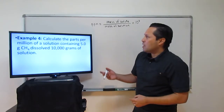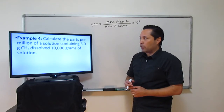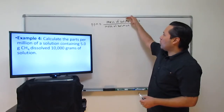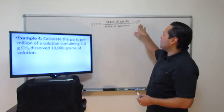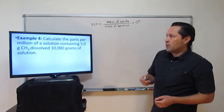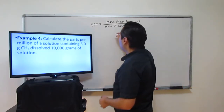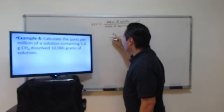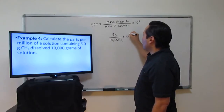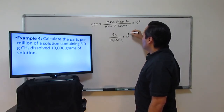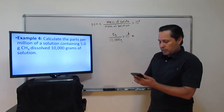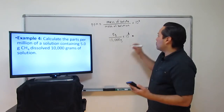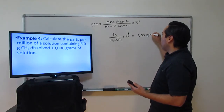In example 4 we're asked: calculate the parts per million of a solution containing 5 grams of CH4 (methane) dissolved in 10,000 grams of solution. The formula is: mass of solute over mass of solution, multiplied by 1 million. So we put 5 grams of methane in the numerator over the denominator of 10,000 grams, then multiply times 1 million (10 to the sixth). Plugging that into the calculator gives us 500 ppm — 500 parts per million.